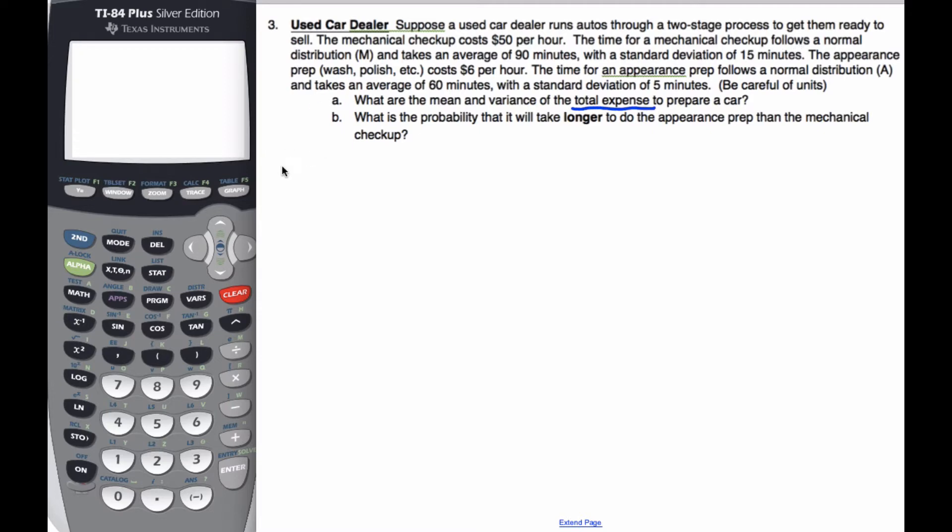Well, let's first define what we have. We know that M is normally distributed 90 minutes, but it says be careful of the units. This is minutes, that's hours. So let's say it's 1.5 hours. And the standard deviation is 15 minutes, which is 0.25 hours, and squared make it variance.